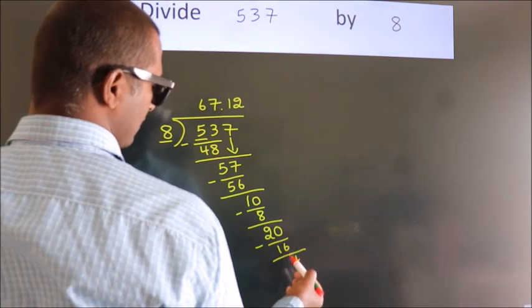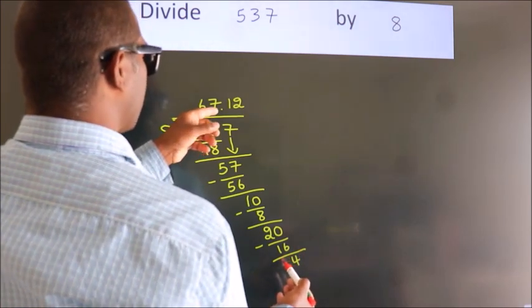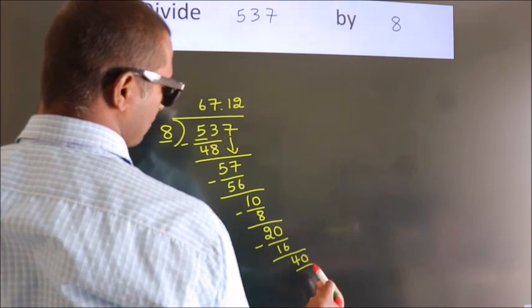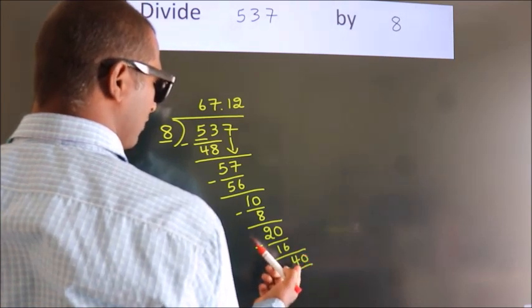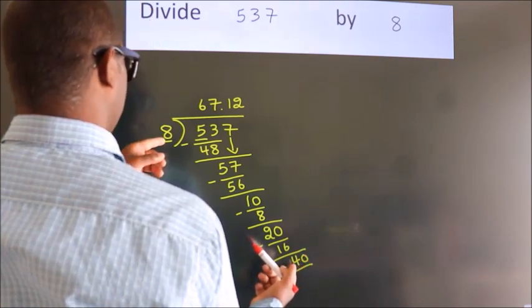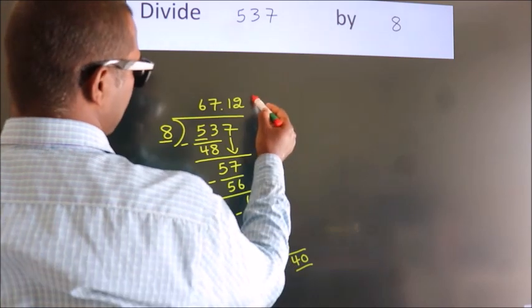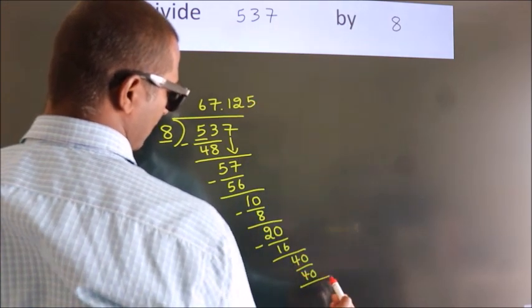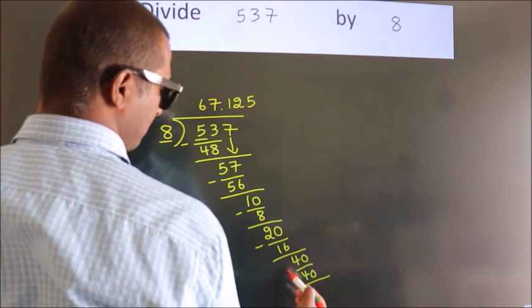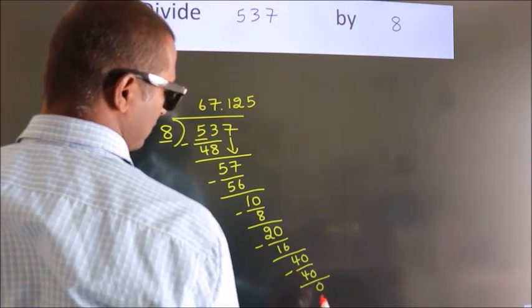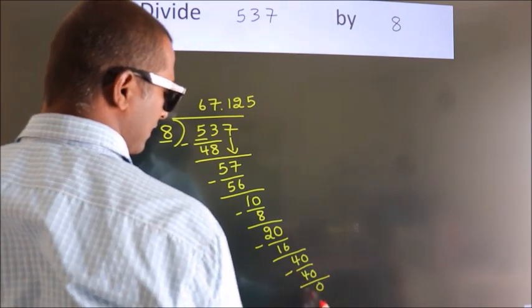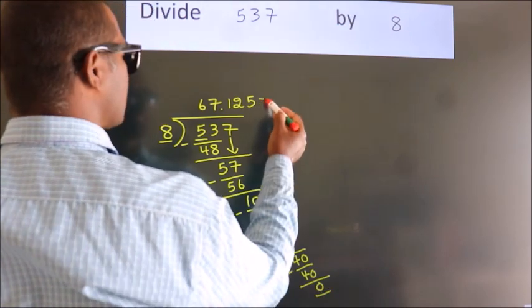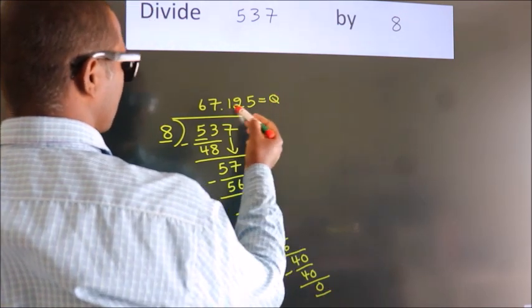After this, take 0. So, 40. In the 8 table, 8 times 5 equals 40. Now we subtract. We get 0. Here we got remainder 0, so this is our quotient.